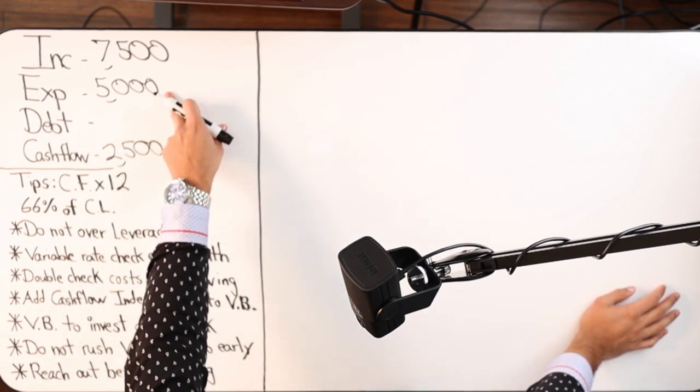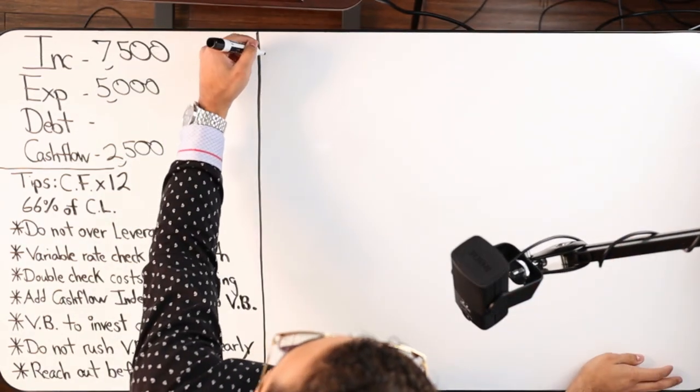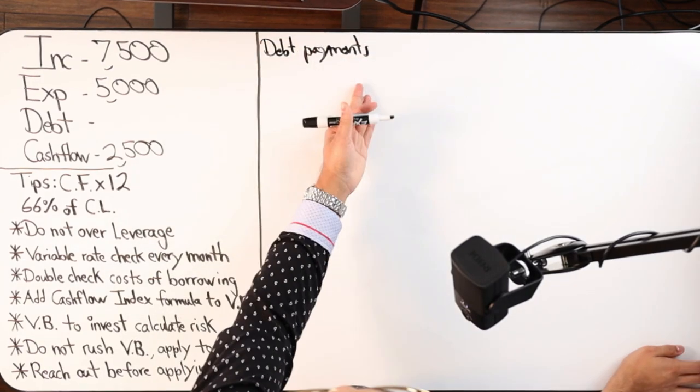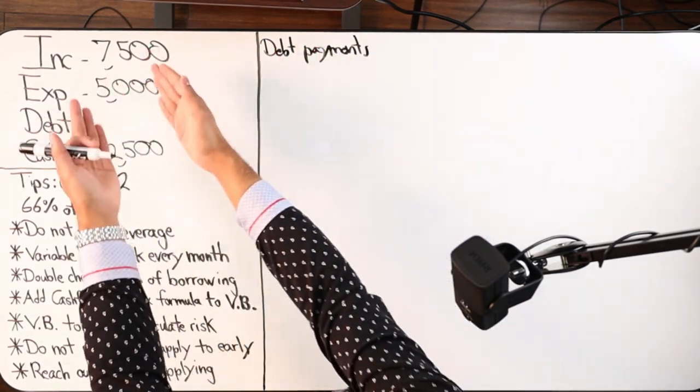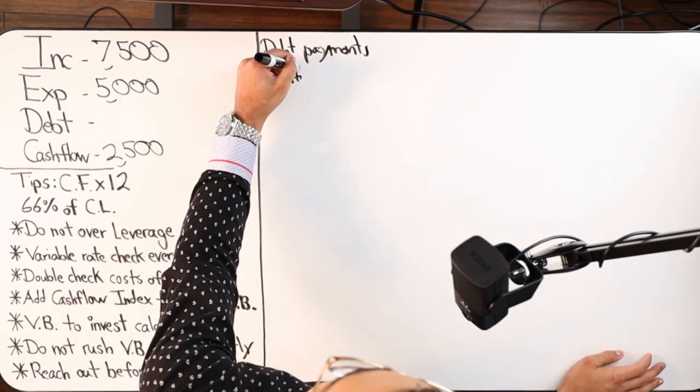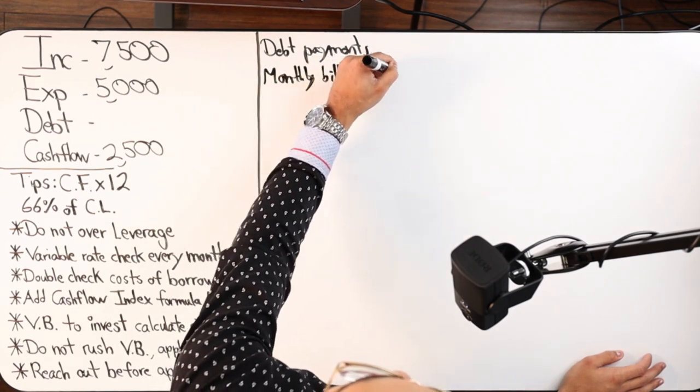When I'm getting your numbers, I want to know every single expense, ladies and gentlemen, so that we know what the true net cash flow is. What does that look like? First, it's obviously the obvious stuff. You got debt payments—don't separate it, that's part of your expense.